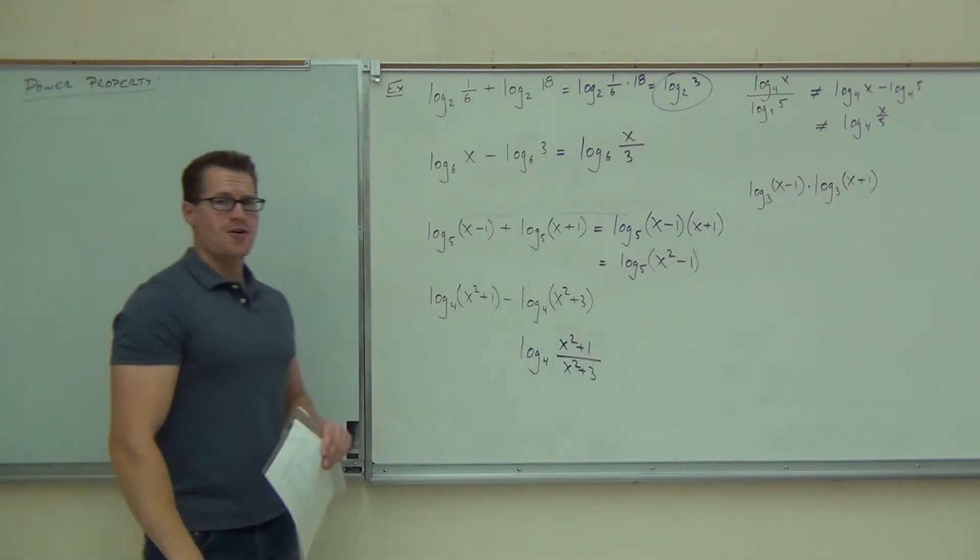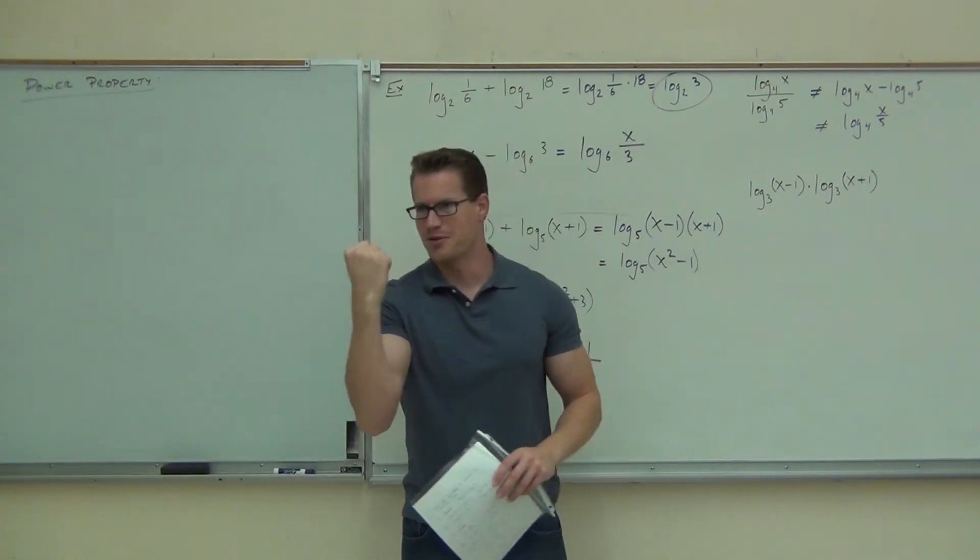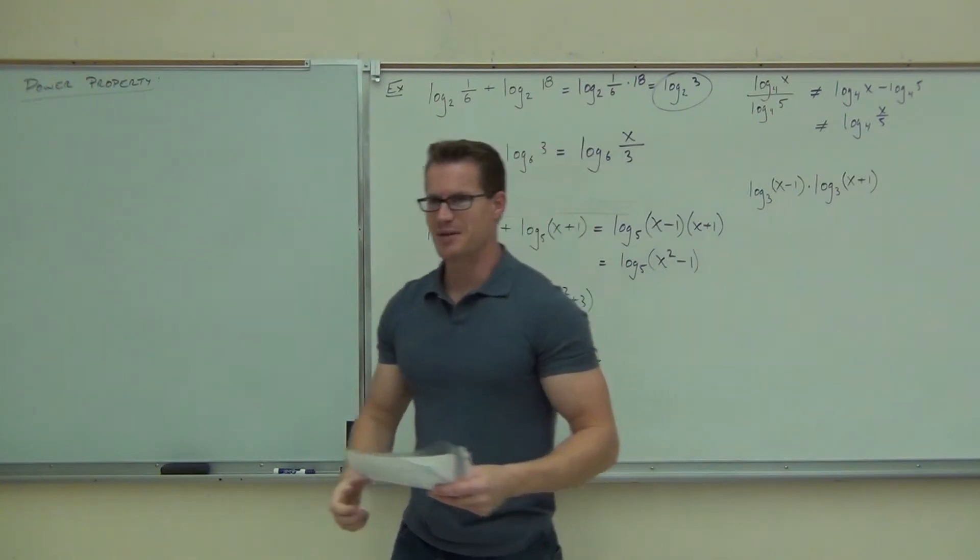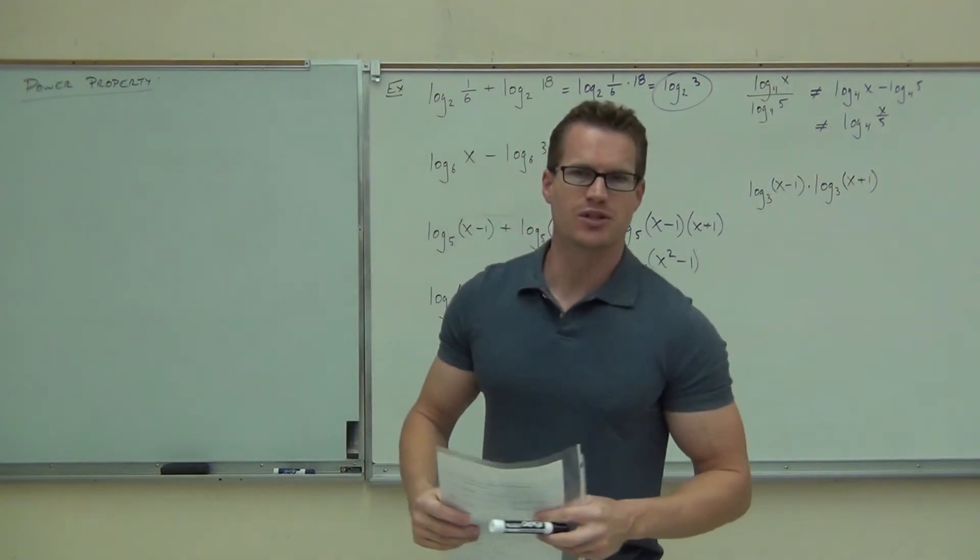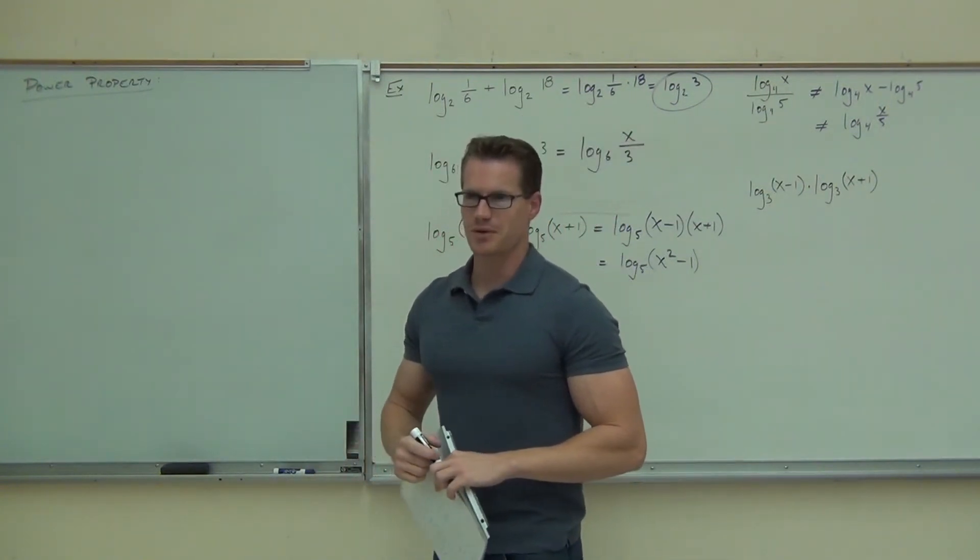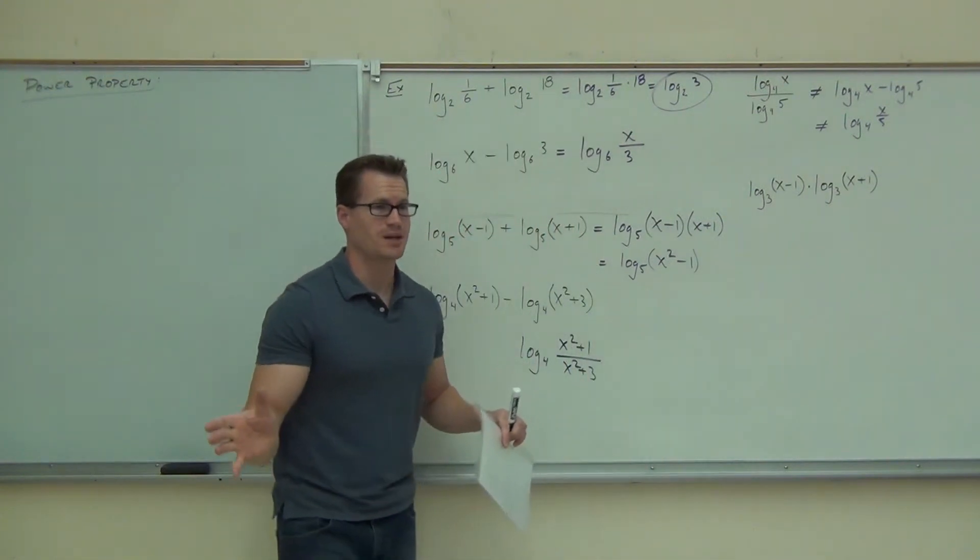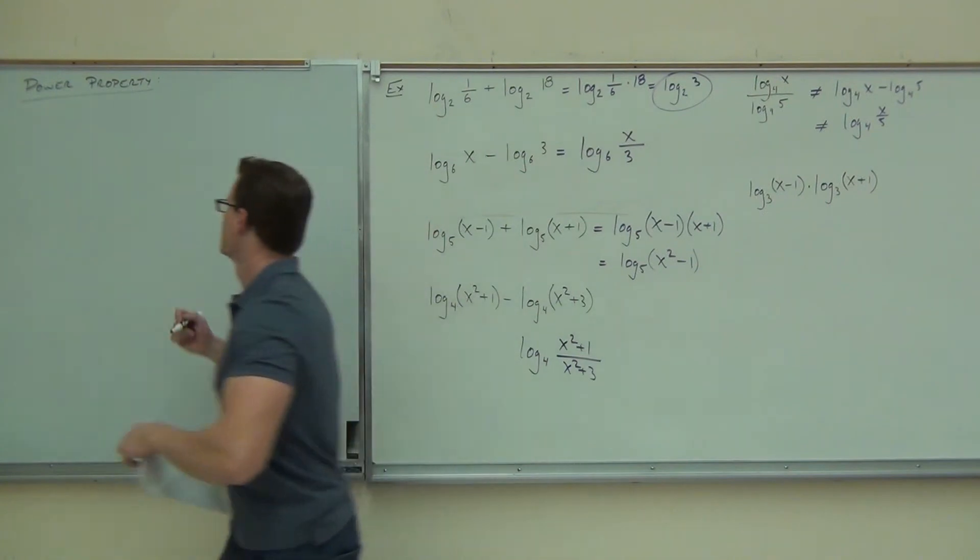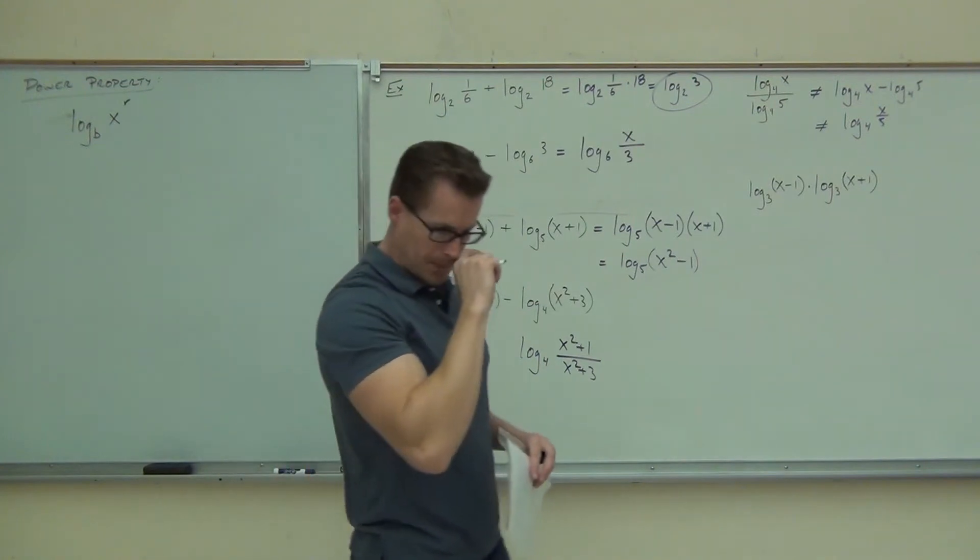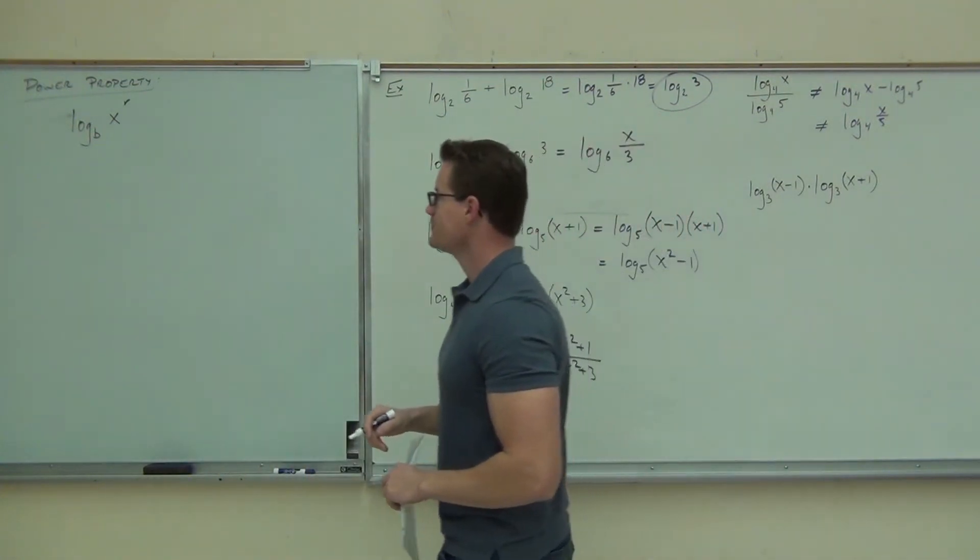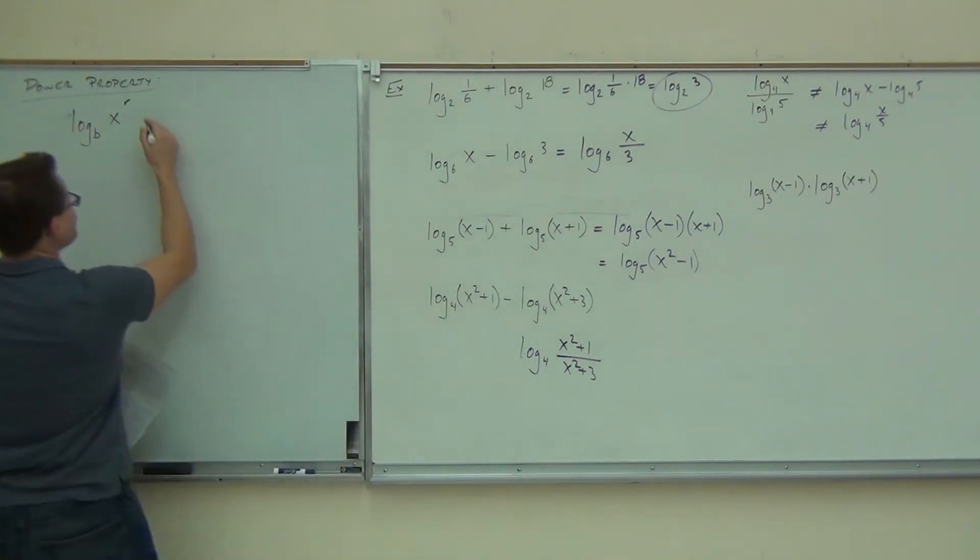Now, the last property is by far my favorite property because it's the power property. This is the best one. It's awesome. The power property is great. You're going to find out why the power. The power property is the only way that you're able to solve exponential equations. You're going to find that out in two more sections. This is the only way it works is with the power property. If you didn't have the power property, it wouldn't be possible. Here's what the power property says.